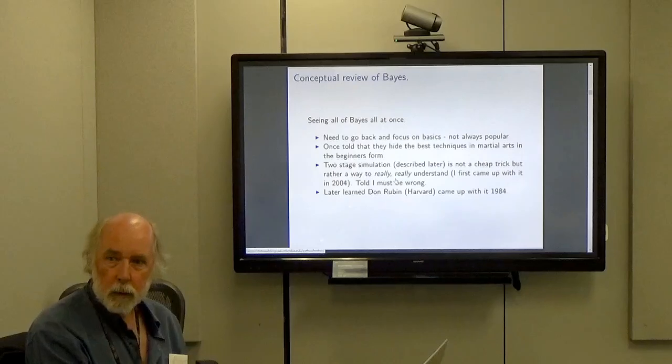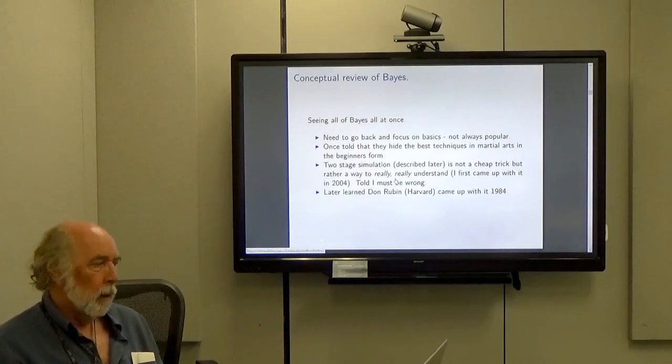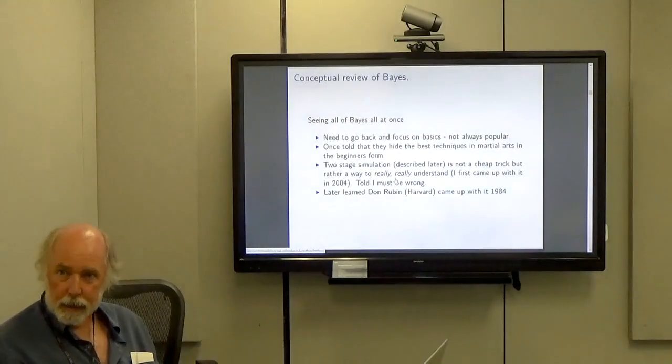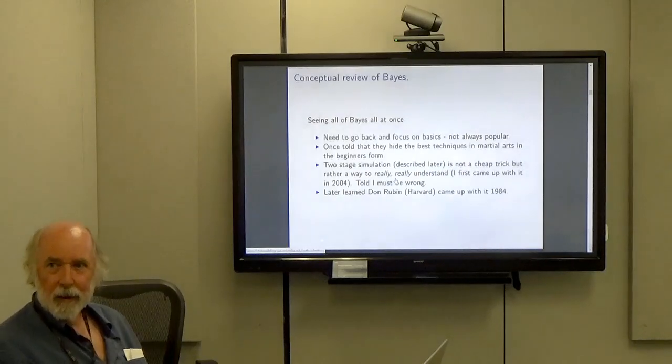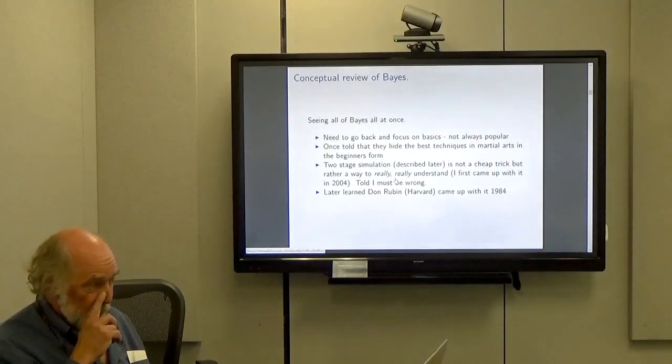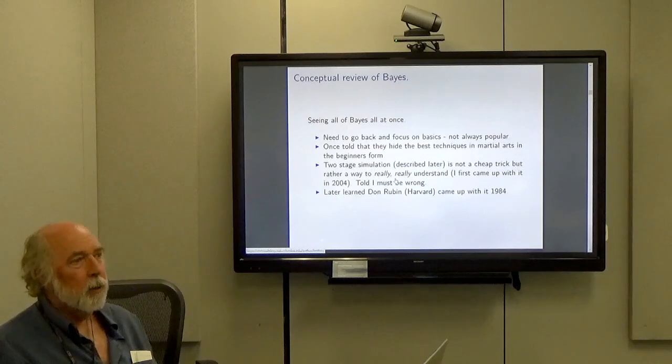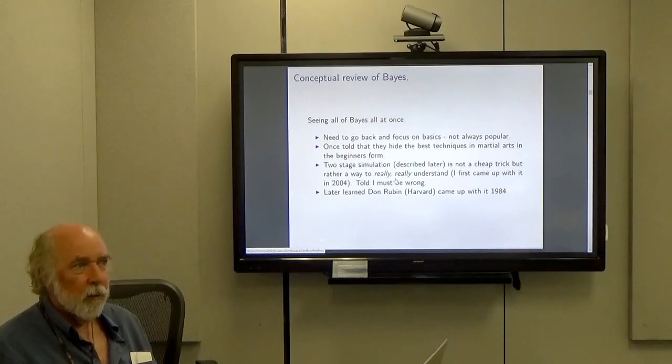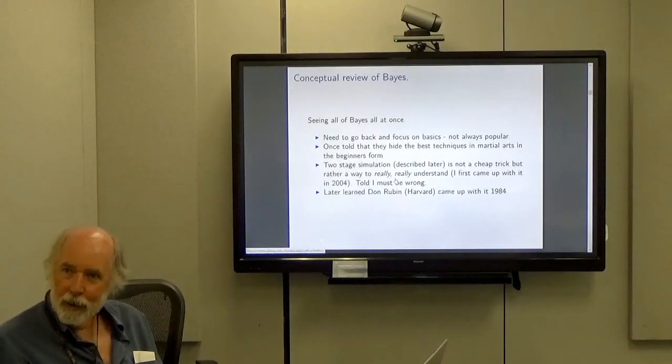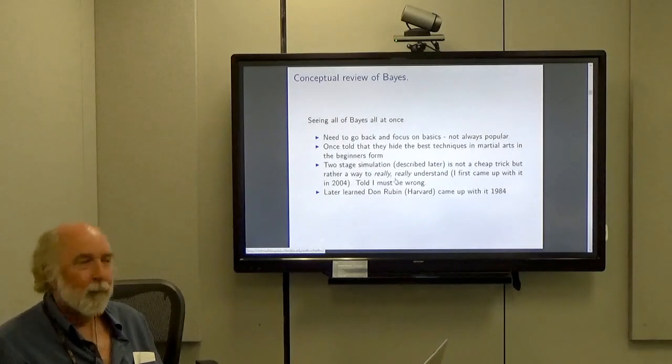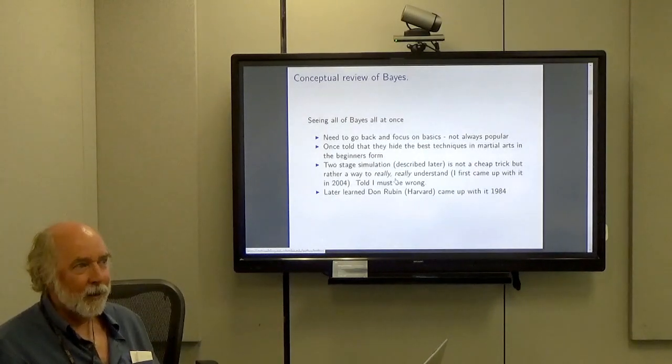I'm going to do a conceptual review of Bayes and I want to get a sense of seeing all of Bayes at once. No mathematical formulas, I just want to see it. I need to go back and focus on basics. It's not always popular. I was once told by someone who ran a martial arts school that they hide the best techniques in the beginner's form. The reason they do that is beginners have to struggle with this first form for like six months to a year, then they get to learn second and third forms. They were really embarrassed and awkward when they did that, so they don't want to go back and practice it. The only ones who practice it are the instructors.